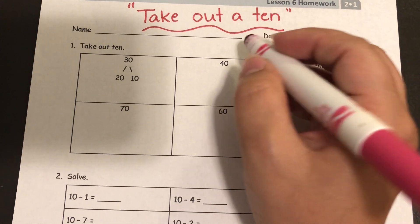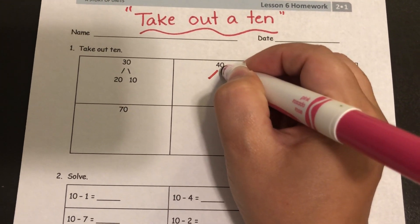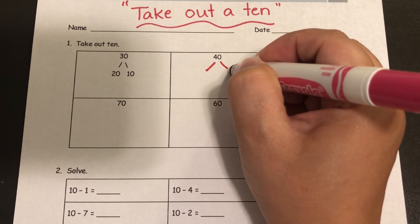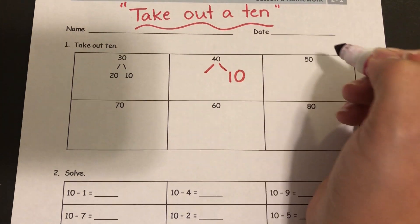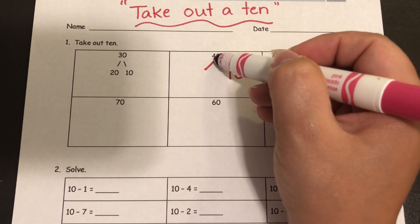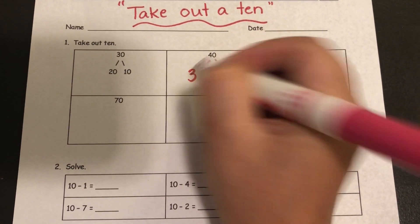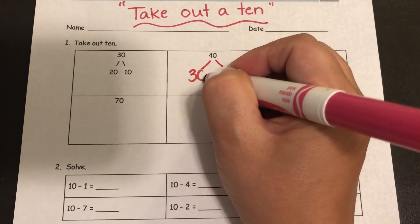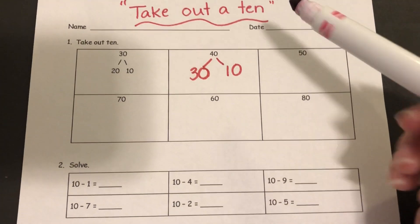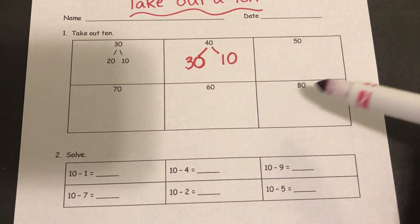If we were to look at the 40 you're gonna decompose your 40, take out a ten. So if I have four tens and I take one of those tens away, it will leave me with three tens which is 30. That's what you're gonna do for this whole section.